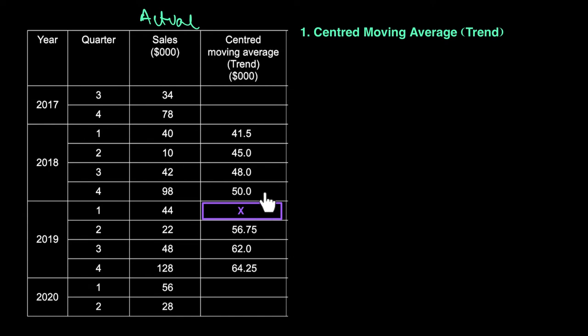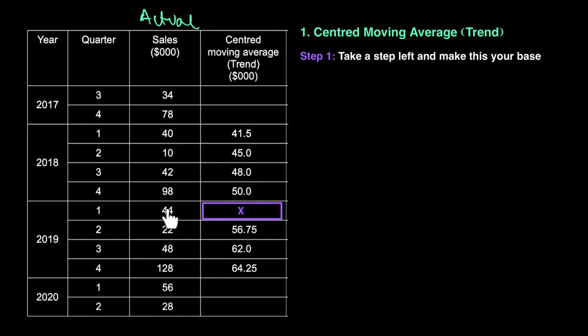To calculate the centered moving average, there are five steps to follow. The first step is: starting from X, take a step left and make that your base. So we move to the sales column and the number 44, and make this our base. This is our starting point — the base number is 44.